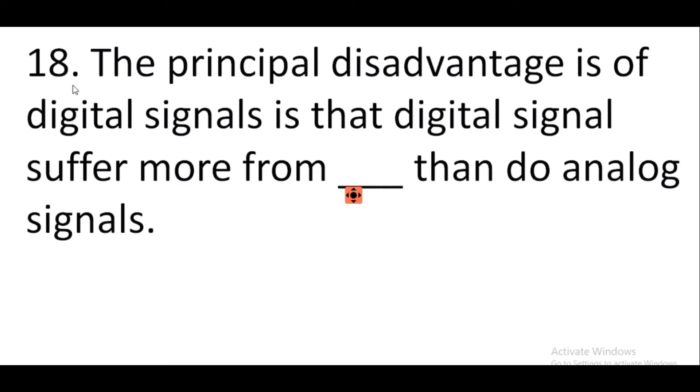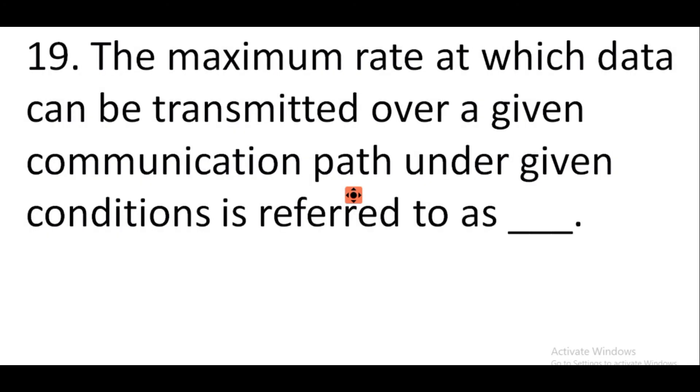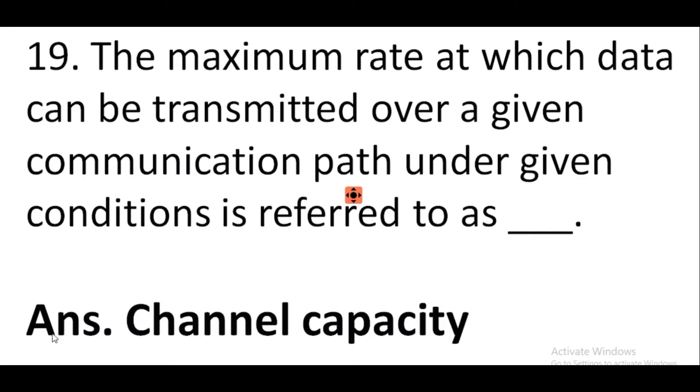Question number 18: The principal disadvantage of digital signals is that digital signals suffer more from attenuation than do analog signals. Question number 19: The maximum rate at which data can be transmitted over a given communication path under given conditions is referred to as channel capacity.